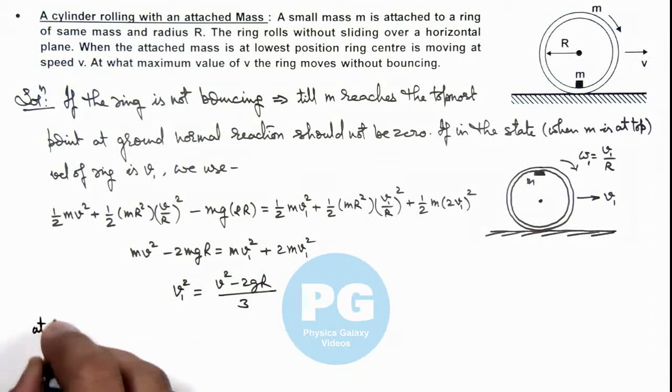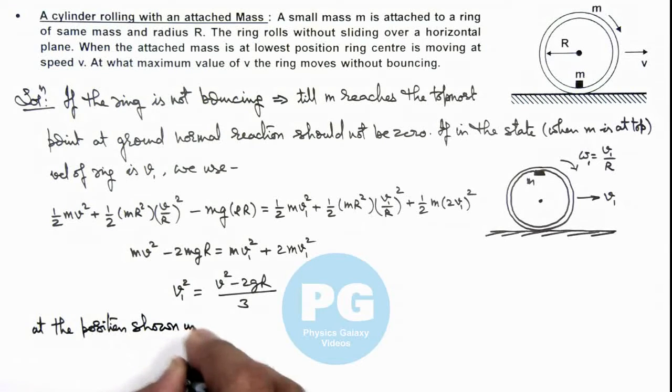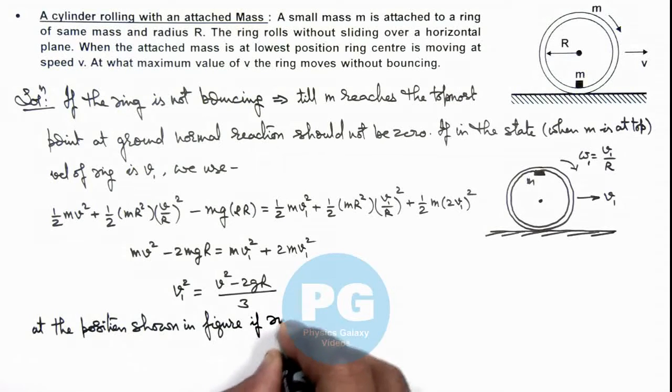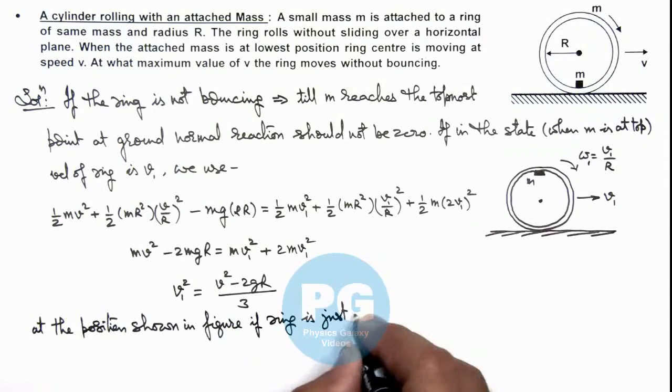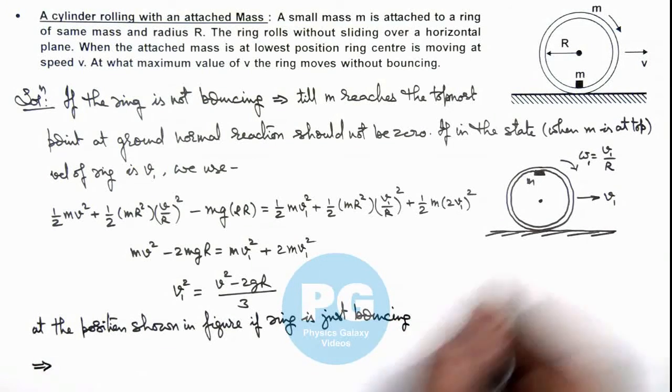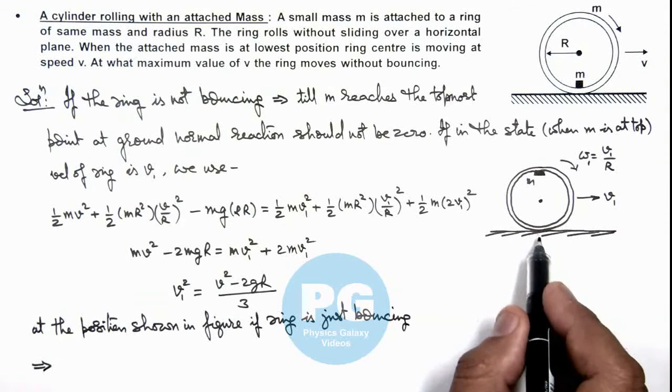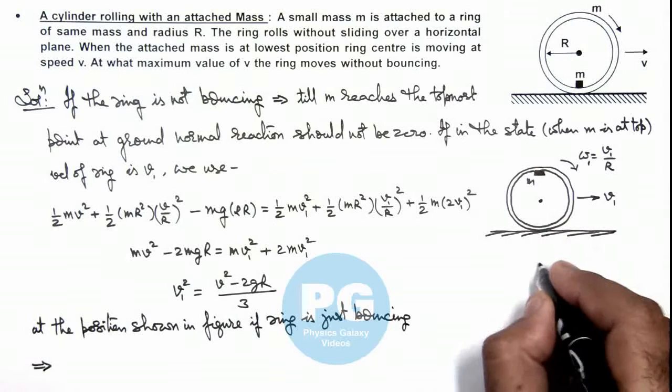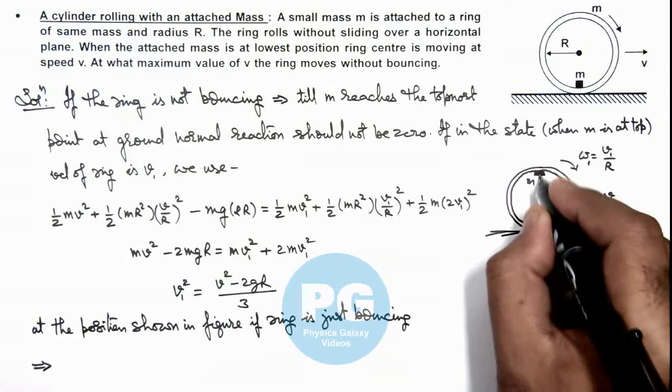At the position or state shown in figure, if a ring is just bouncing, this implies here we can write for this system the downward force acting on it is 2mg, the weight of the system. Here if we draw the free body diagram, there will be 1mg on the ring and 1mg on the block. A normal reaction is acting up.